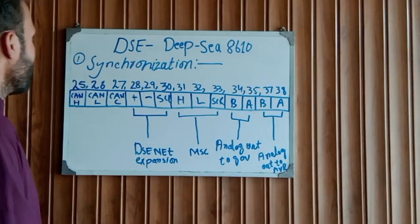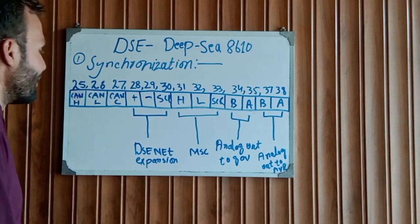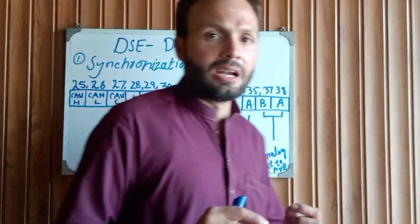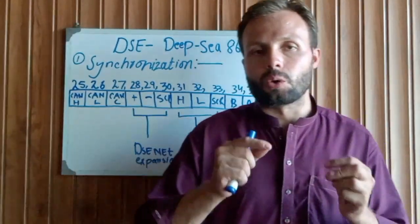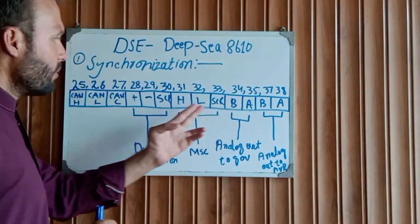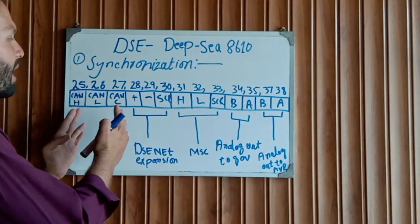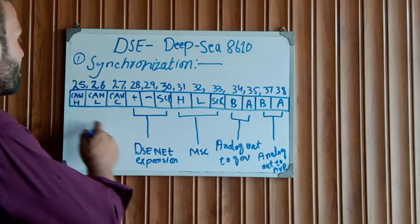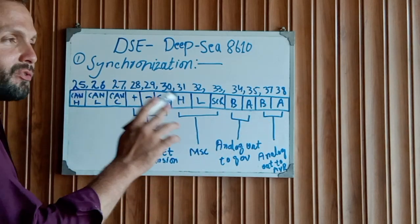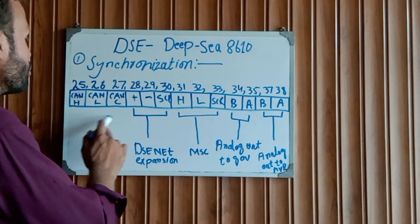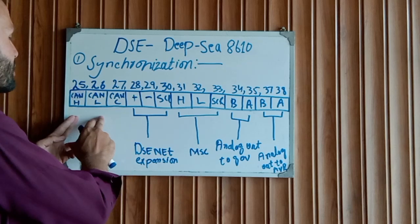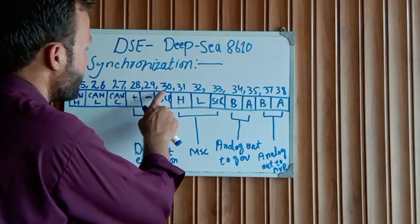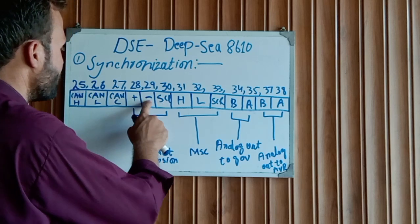As you can see, pin 25 and pin 26 and pin 27 - this is the CAN high, CAN low, and CAN common. CAN communication is used in electronic-type model generators which have engine control modules. All generators that are parallel and synchronized together, you need to put all generator wiring to each DSE from end to end with a 120-ohm resistor. This is a special type of wire used for CAN communication - shielded wire or screen wire. After that, pin 28 and pin 29 and pin 30 - this is the screen wire, positive, and negative.